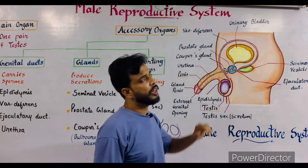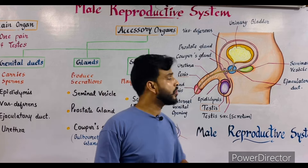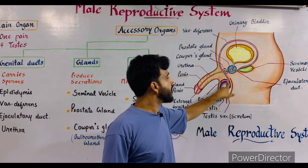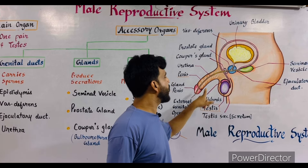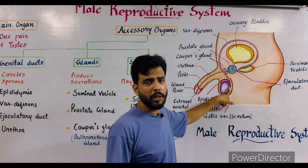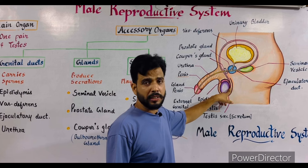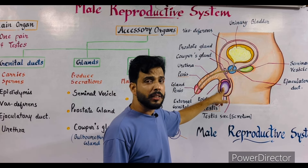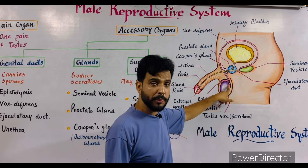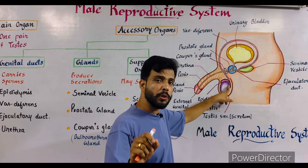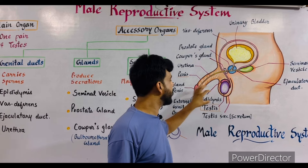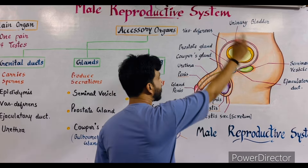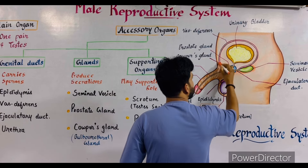Now the second part — the accessory organs. Just above the testes, a tubule is present which is known as the epididymis. It is about 6 centimeters long and spreads over the testes. When sperm is produced inside the testes, the mature sperm reaches into the epididymis. So the epididymis stores the mature sperm — that is its function.